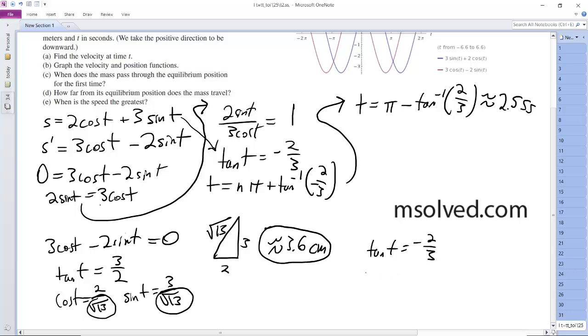And we come up with t is equal to arctangent of negative 2 thirds plus n pi seconds.